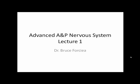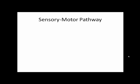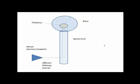Welcome to the first Nervous System Lecture for Advanced Anatomy and Physiology. In this lecture, we're going to be examining the sensory motor pathway. We're going to begin with this simplified diagram of the central nervous system, showing the sensory part of the sensory motor pathway.